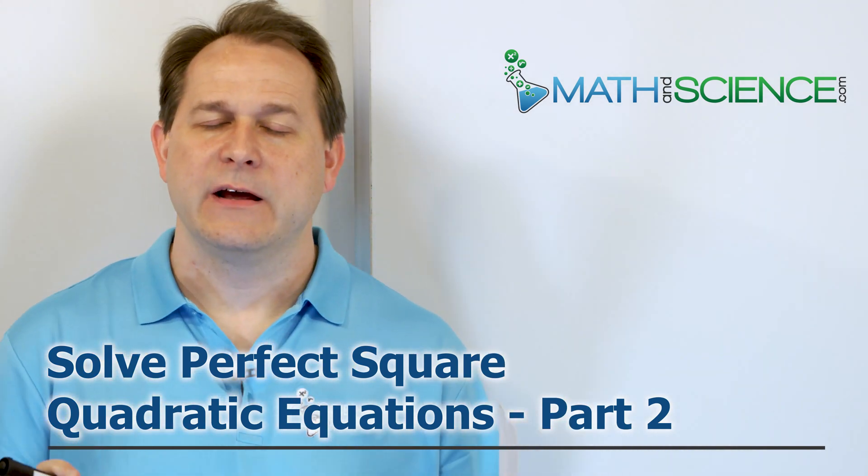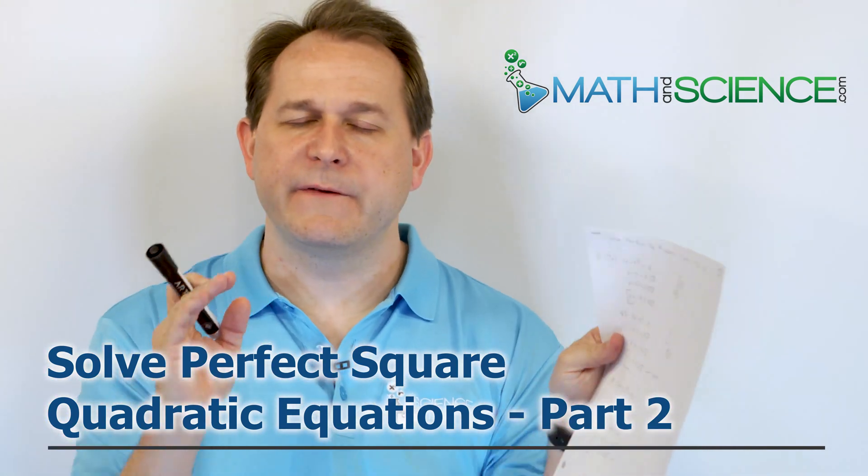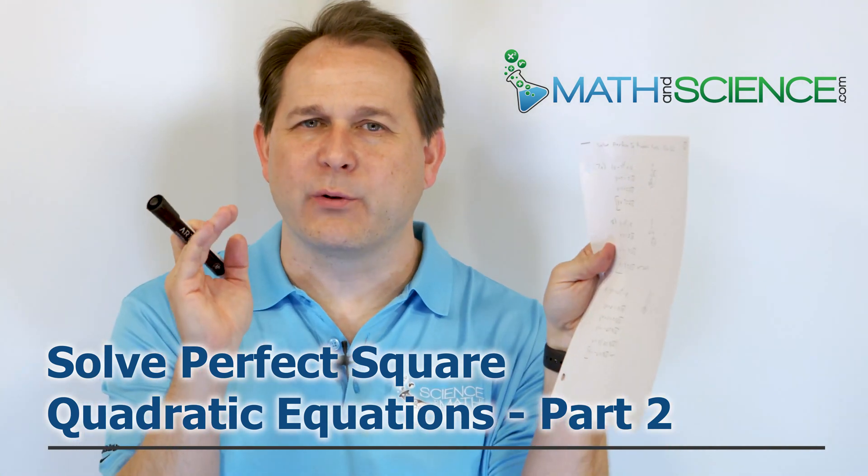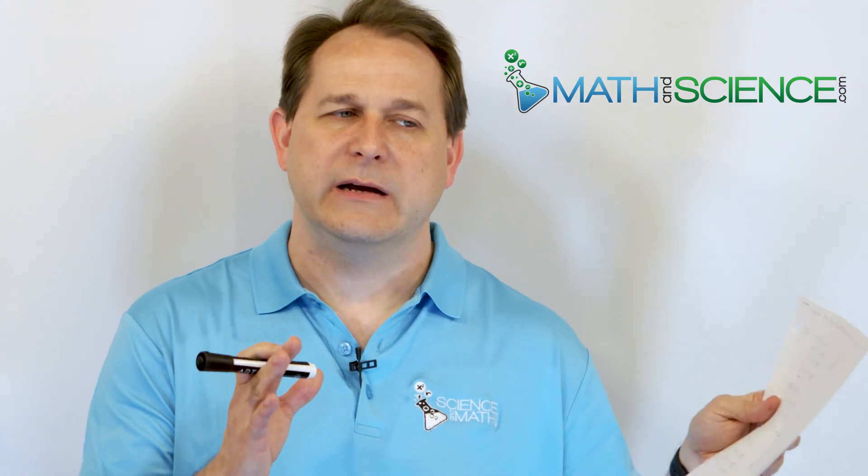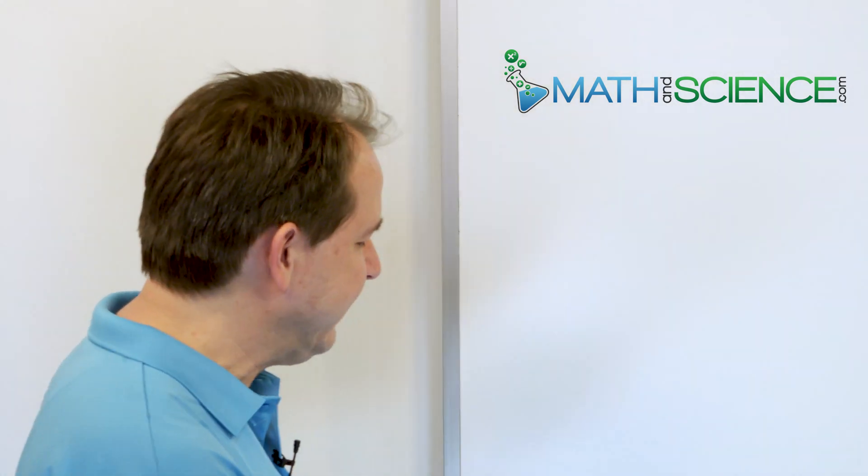Remember, those are just quadratics which have all of the variables wrapped up in a nice, neat parentheses term, which is always squared if it's a quadratic. This allows you to take the square root of both sides of the equation to solve it very simply. So it's kind of a simple class of equations that makes it easier for us to solve.